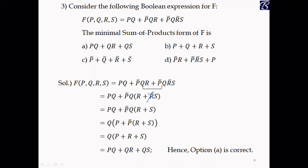Now observing the first and second terms, Q is the common factor. Taking Q out gives Q(P + P̄(R + S)). Inside the brackets this matches the form A + Ā B, so we remove the literal P̄, leaving Q(P + R + S). Multiplying out gives PQ + QR + QS. Option A is correct.